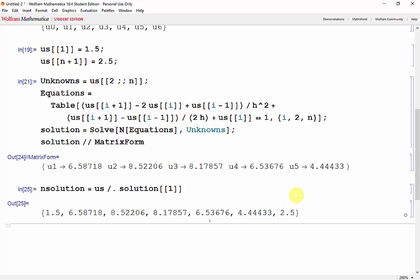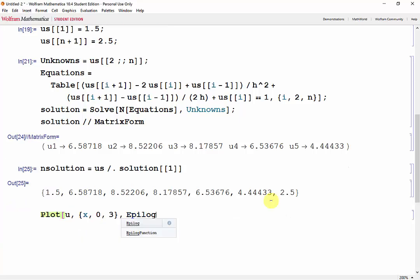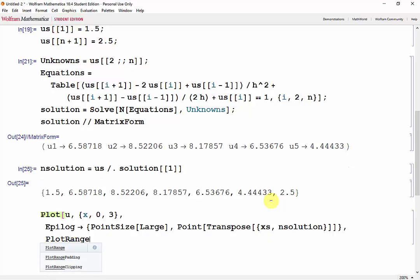And we can also plot our points over the exact solution we obtained in the previous video in order to compare them. So we'll plot u, which we got from the last video, with x going from 0 to 3. And then the epilogue with a point size large. So our point will come from the transpose of x's, comma, n solution. And we'll adjust the plot range, just so we can see all the data points. We'll take x from negative 0.1 to 3.1 and y from 0 to 10.